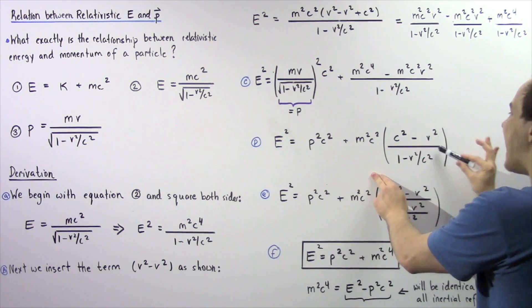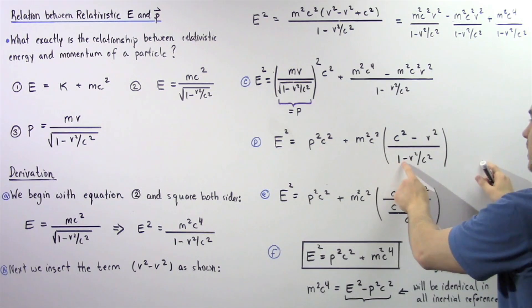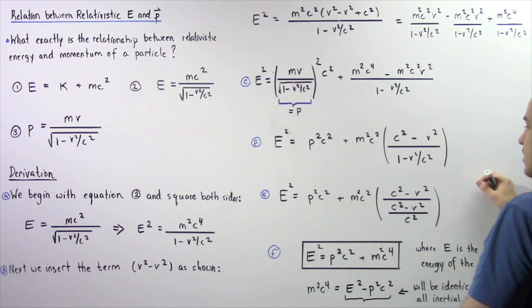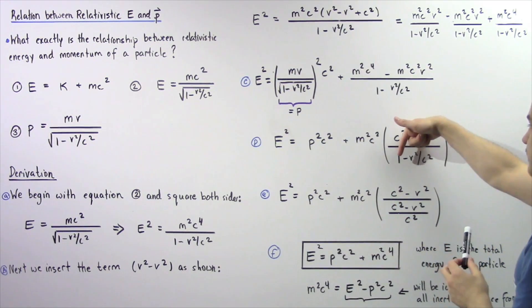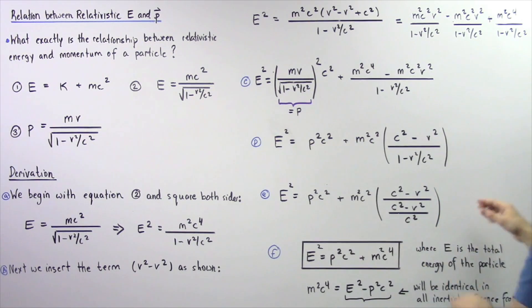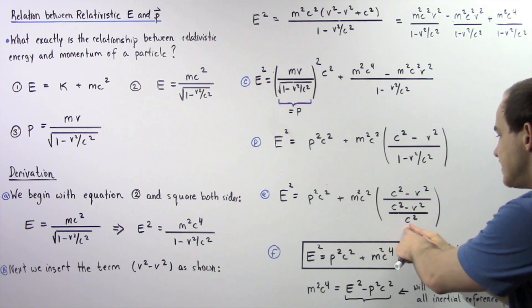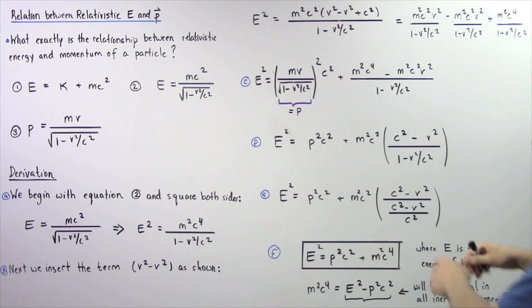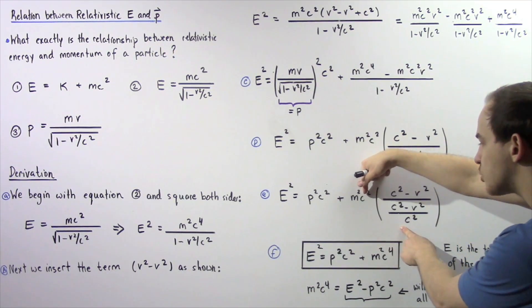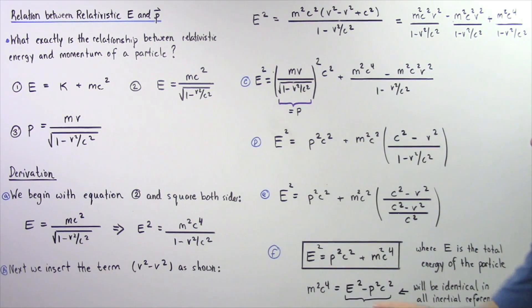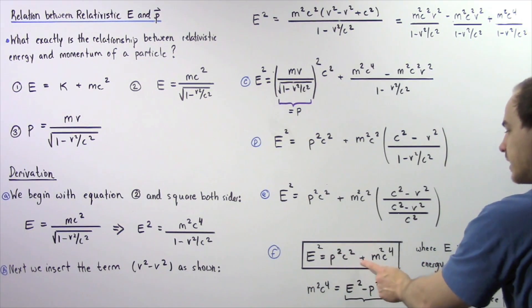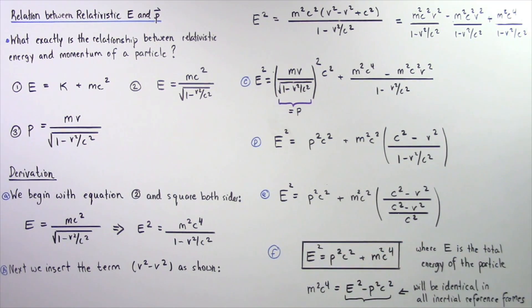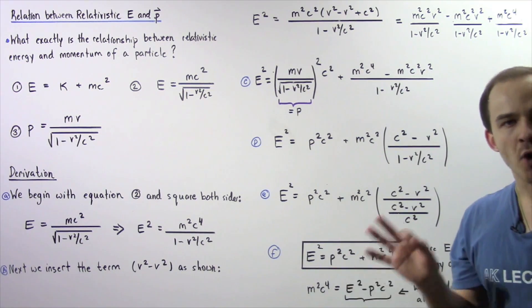Let's focus on the denominator of this term: 1 minus v squared divided by c squared. Finding the common denominator, which is c squared, gives us c squared minus v squared divided by c squared. These cancel and c squared comes to the top, combining with the other c squared to form c to the fourth power. Finally, in part F, E squared equals p squared times c squared plus m squared times c to the fourth power, where E is the total relativistic energy.